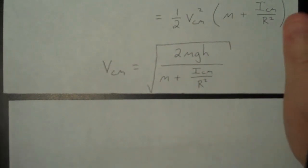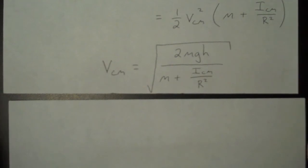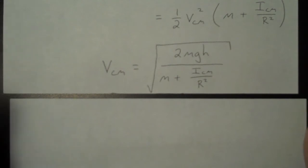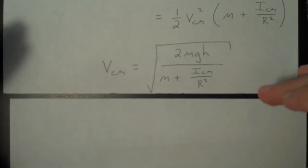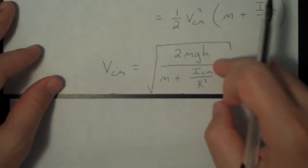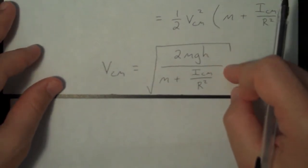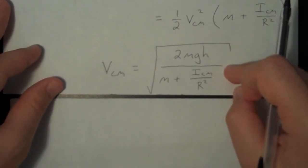So it's the square root of 2mgh divided by m plus Icm over r squared. I have yet to account for the fact that this is either a solid or a hollow cylinder. This is always a good practice when you are doing physics problems. Keep everything as general as possible so that you can recycle equations as you go about the problem.